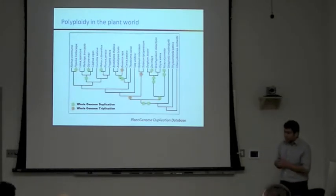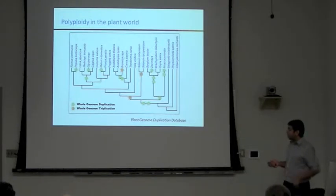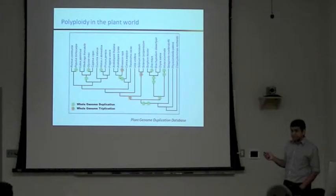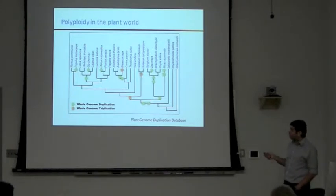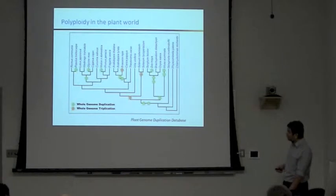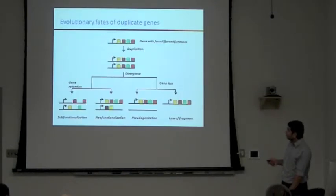In our lab, we have been looking at additional duplicate genes in plants. One major reason for that is polyploidy, which is highly prevalent in the plant world. What I'm showing here is all of the sequenced genomes, and in just the sequenced genomes, you have several instances of polyploidy which have actually been found. Some are very recent, very close to the species, while others are quite far off in the evolutionary history.